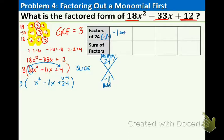The factors of 24: negative 1 and negative 24, negative 2 and negative 12, negative 3 and negative 8, and negative 4 and negative 6. Now we just need to add them. We get negative 25, we're looking for negative 11 by the way, negative 14, negative 11 ding ding ding, and negative 10.